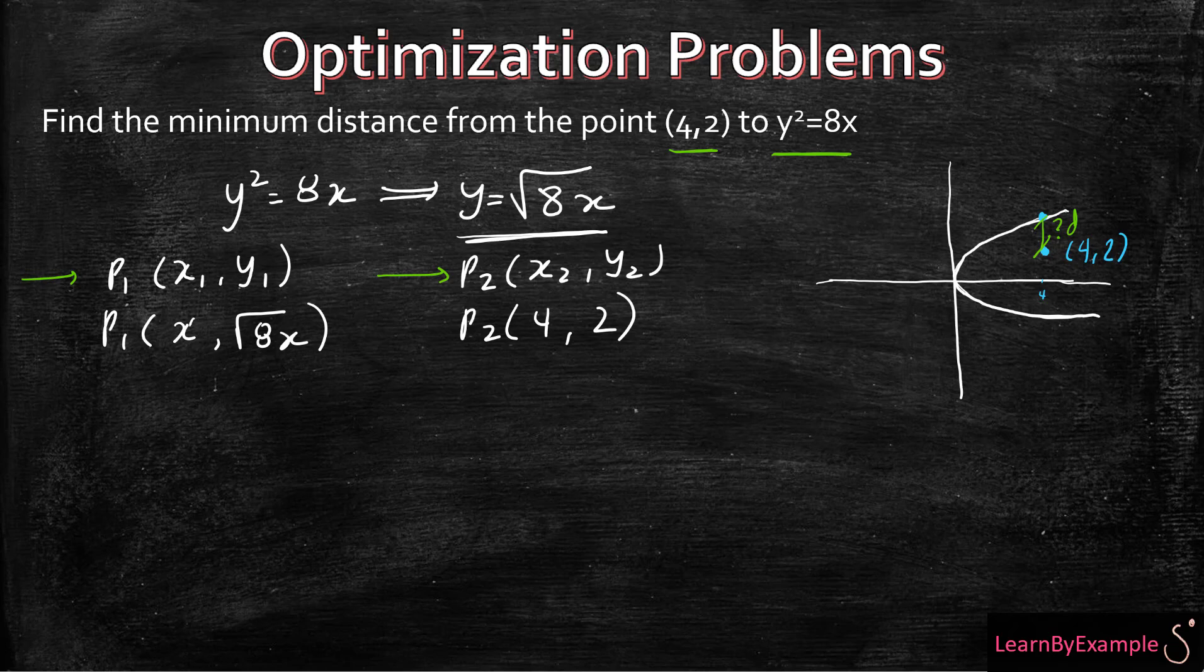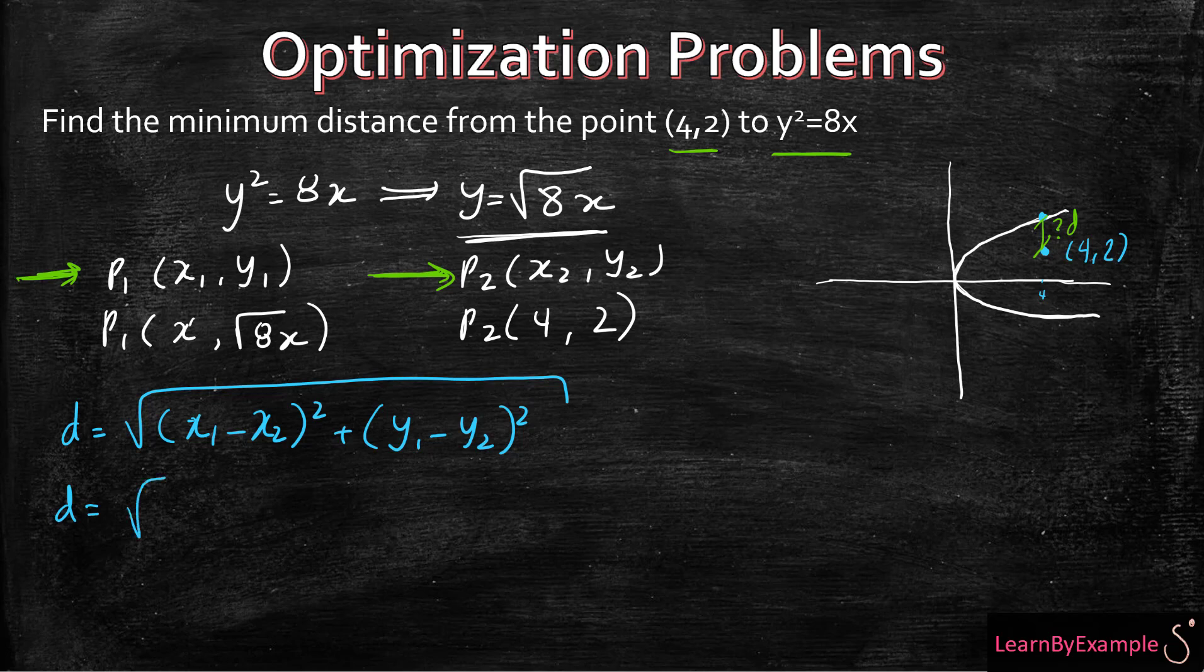So let's write out the equation. The distance d is going to be the root of (x₁ - x₂)² plus (y₁ - y₂)². So now it's just a substitution. Now that we've written everything very clearly, you just got to plug and chuck. So d is equal to x minus 4 squared, plus y₁ is root 8x minus 2 squared.